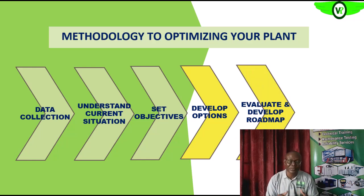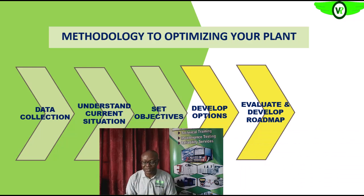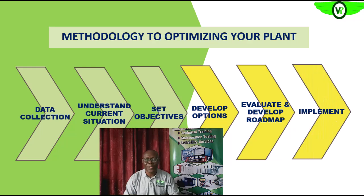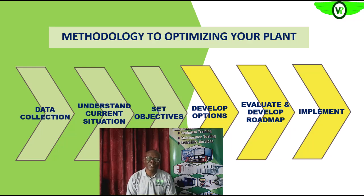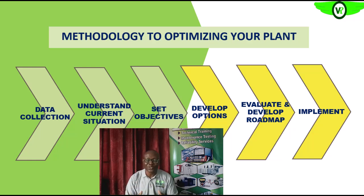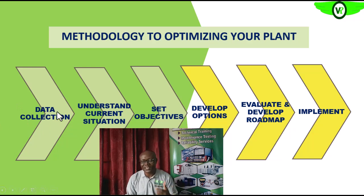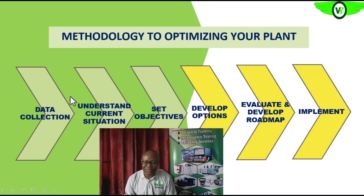When evaluating the roadmaps, look at the one that is more feasible from the different options available. Finally, we implement. As you are implementing, you will see areas that you did not capture in your first analysis. You capture that — there is always room for continuous improvement. Feed that back into the first stage of the process, and the process continues until you get to the level that you actually want to reach.